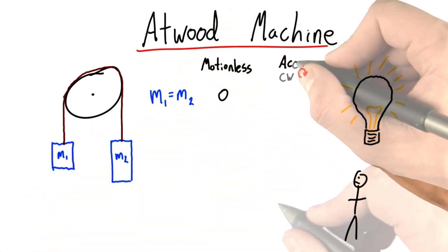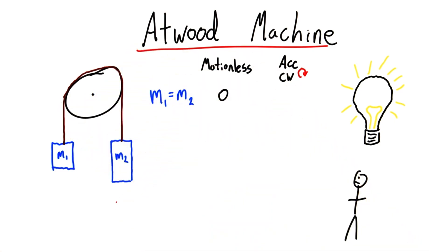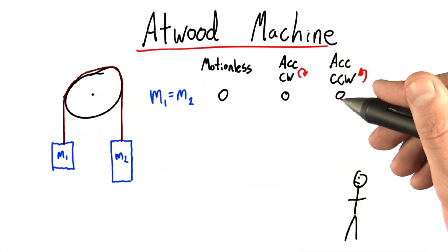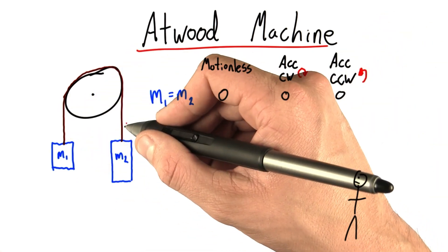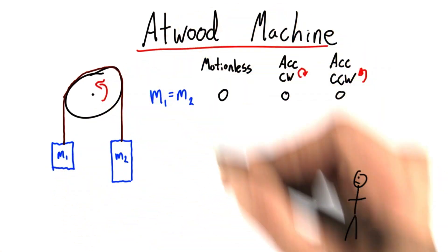Will it accelerate clockwise? So that would mean this guy goes up and this guy goes down, or would it accelerate counterclockwise? That would mean this mass would go up, this one would go down, and the pulley would spin that way.